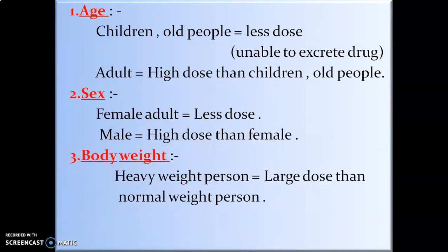First, age. The dose for children or old people is less because the excretion rate is less in the case of children and old people as compared to adults. In adults, a higher dose is required than for children and old people because the rate of excretion is more.